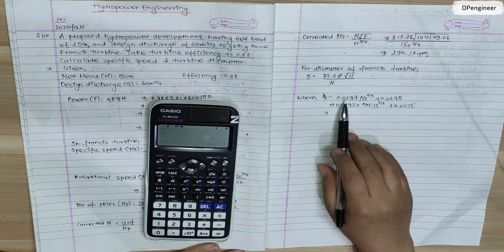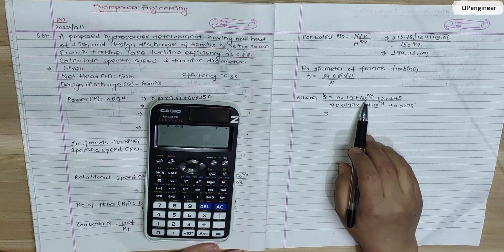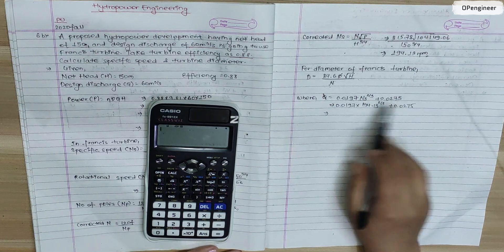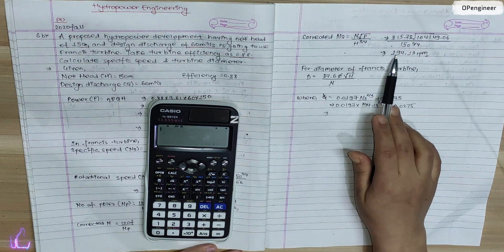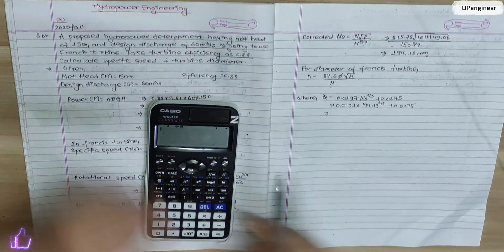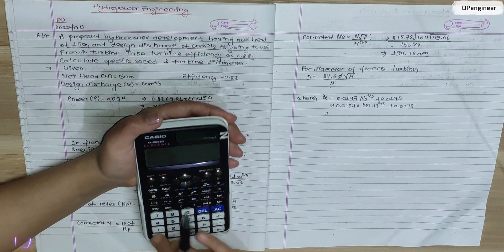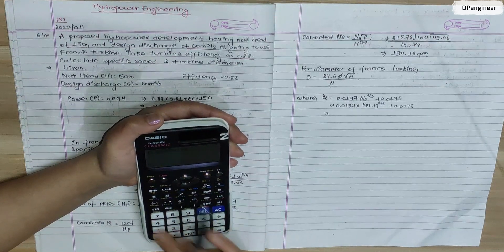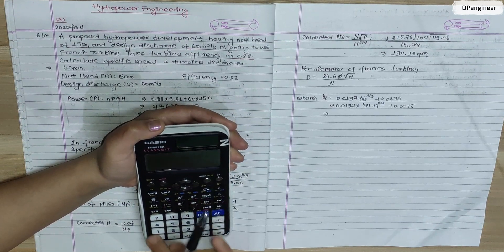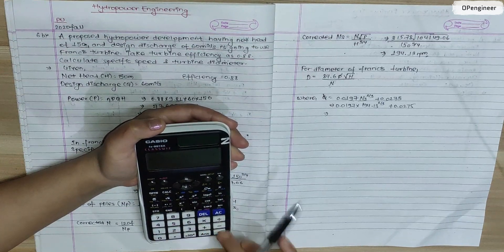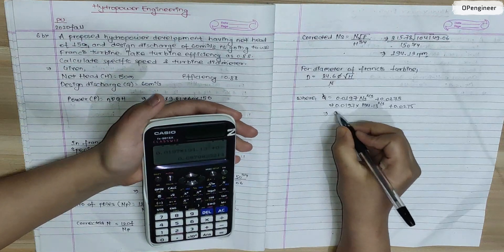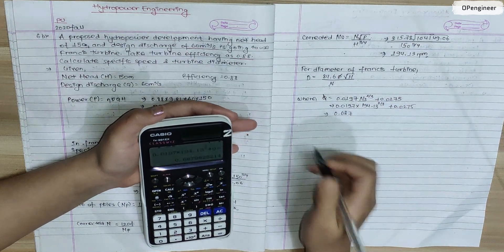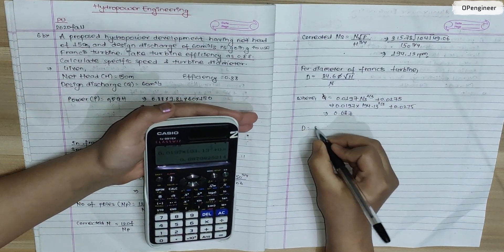The corrected specific speed is 194.13. Then we calculate 0.0197 into 194.13 to the power 2 by 3 plus 0.0275. We calculate phi value 0.687. With phi value we can calculate the diameter.